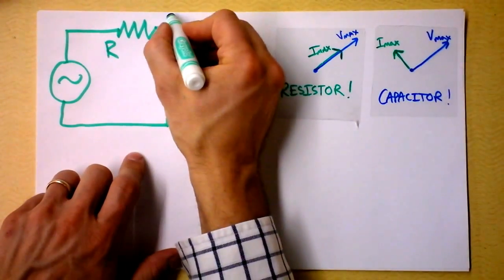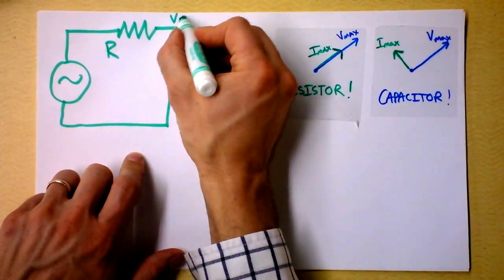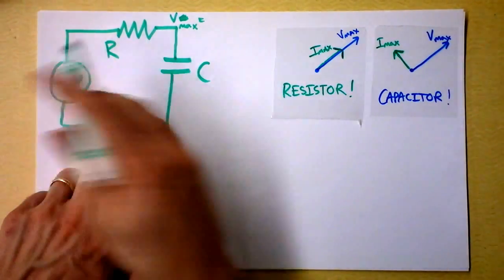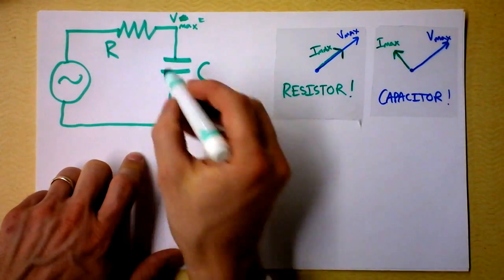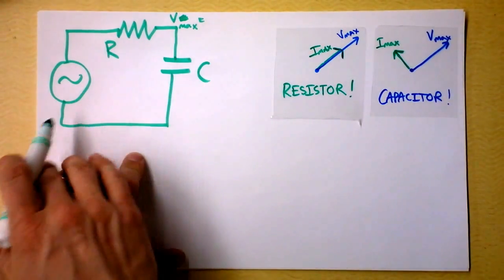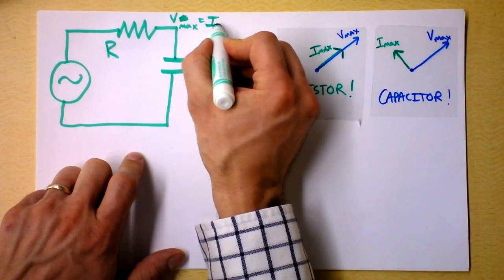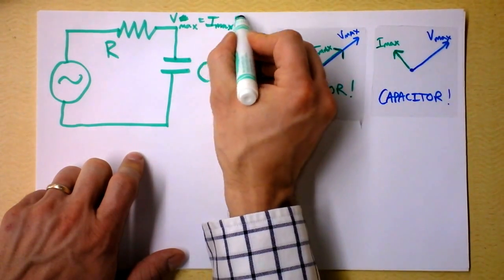Now the voltage across this resistor is, well, let me talk about Vmax. Vmax, it's going to be changing continuously as a function of time, but I want to disregard the time and just set that sine function always to be 1 so I can talk about the maximum voltage. That's just the maximum current times the resistance.